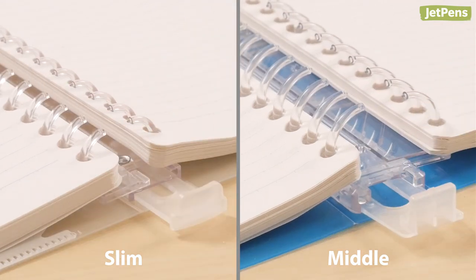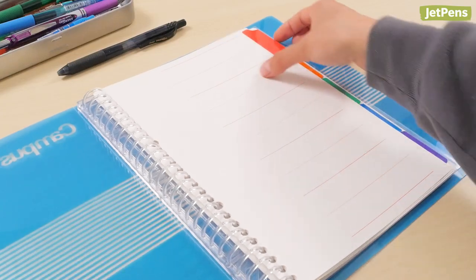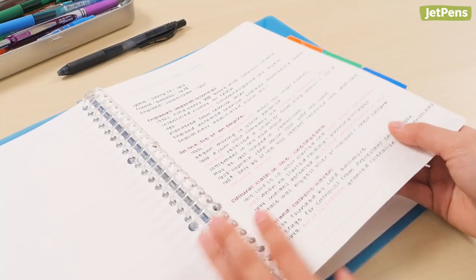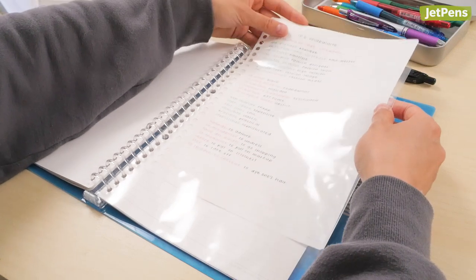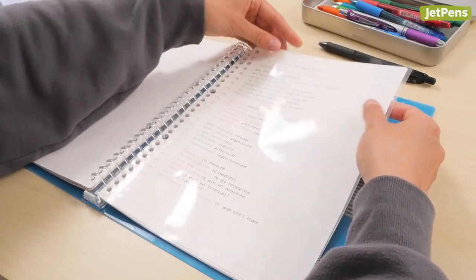Both the slim and middle sizes will fit 100 sheets of paper, so they're perfect for students with a lot on their hands. Each middle series binder also comes with five colored divider tabs and a plastic sleeve, making it even easier to organize your papers.